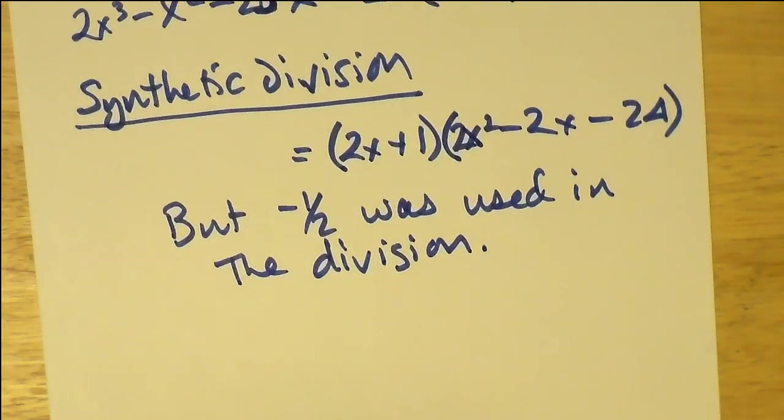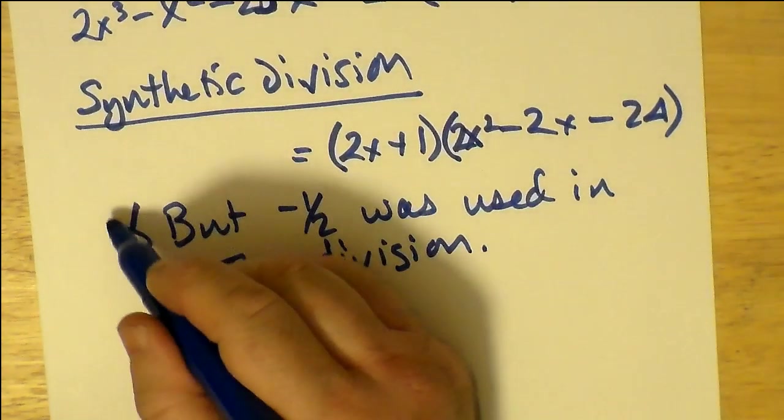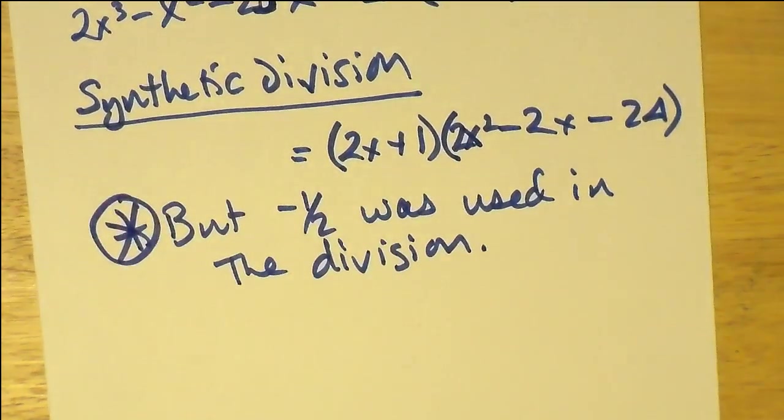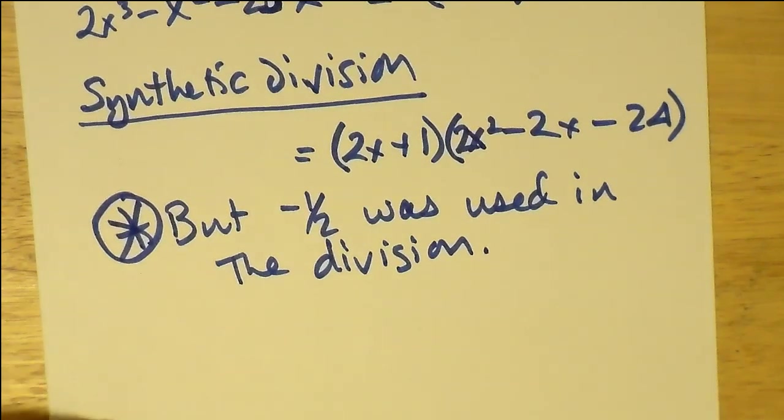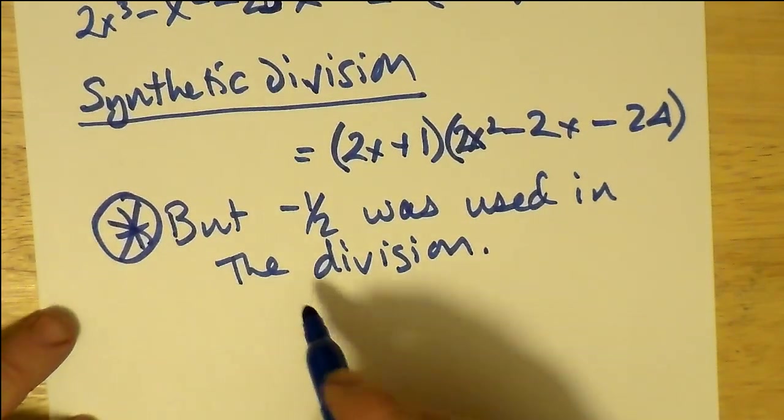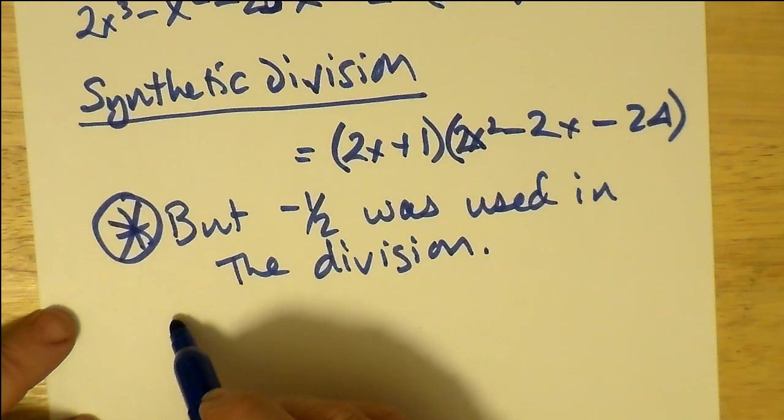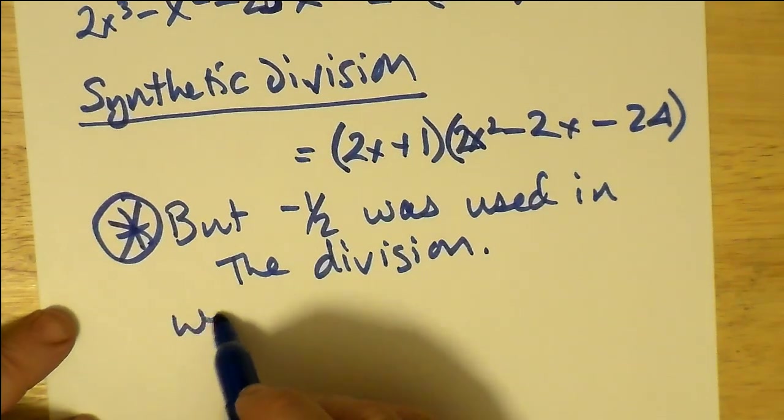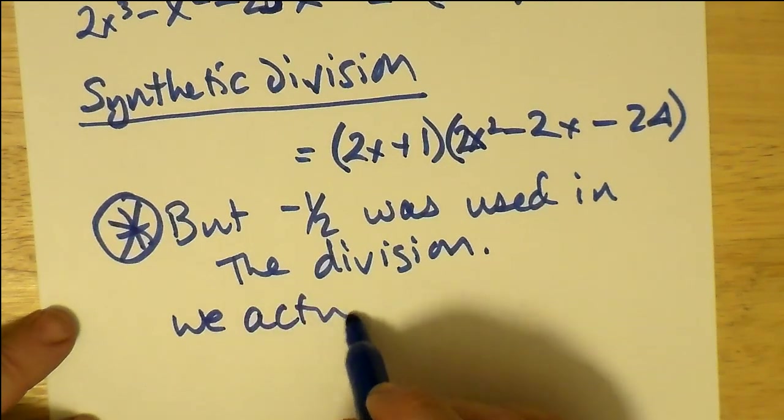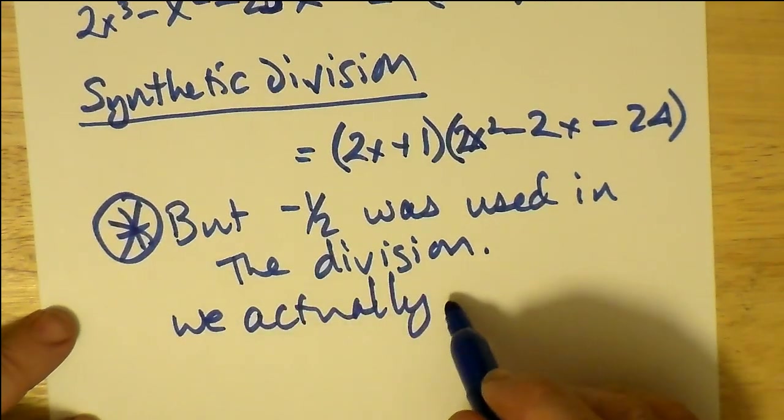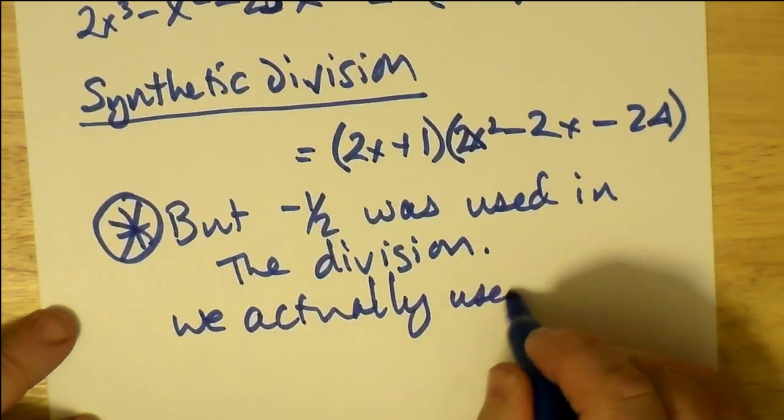Of x + 1/2. So it's very important to remember that -1/2 was used in the division, and so we pretended that x + 1/2 was the factor, which by the factor theorem it ought to be, with 2x + 1 being the correct factor going by the factor theorem.